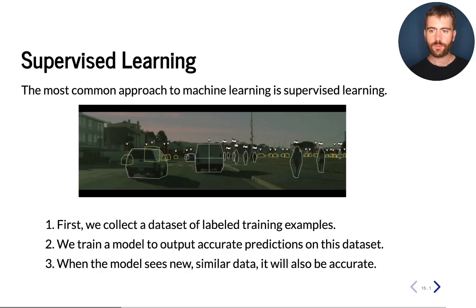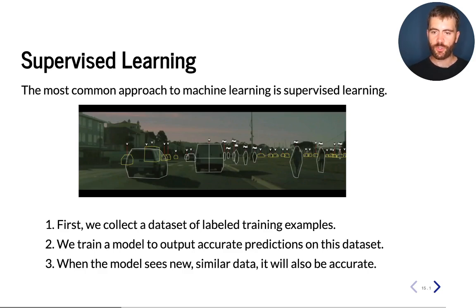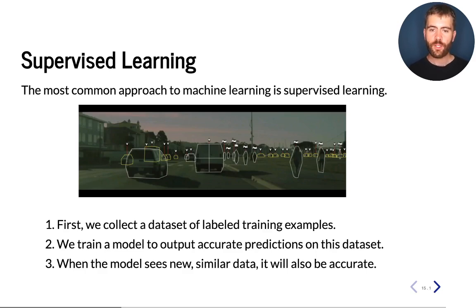The way that we get it to do that is by collecting a labeled dataset of training examples, which are pairs of inputs and outputs. And then we train the algorithm to output these correct predictions on our dataset. We train the model to output accurate predictions on the training dataset, and then when the model sees new similar data — data similar to what it has seen in its training set — it will also output accurate predictions.